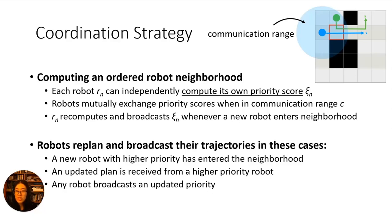Each robot keeps track of the other robots within its range and whether they're of higher or lower priority. Whenever a new robot comes into range, we recompute our own priority and broadcast it so everyone has a consistent view of the priority ordering. We prove in our paper that there can be no ordering cycles and thus no planning deadlocks.